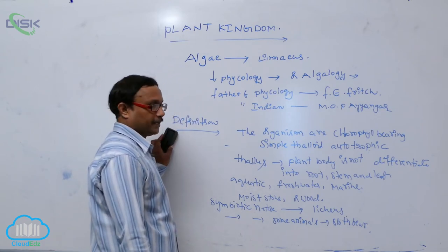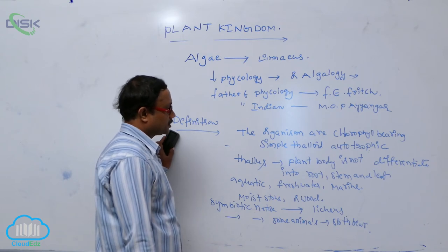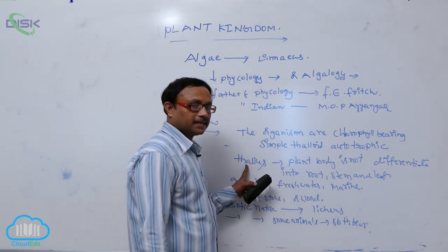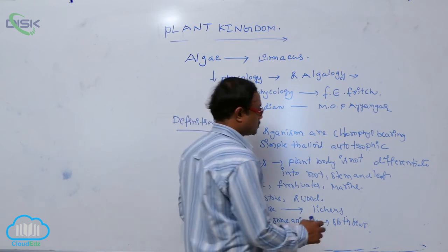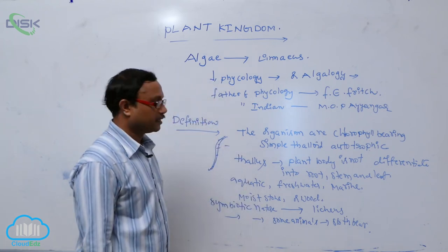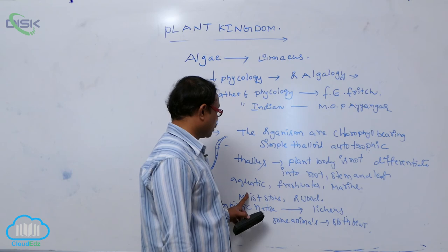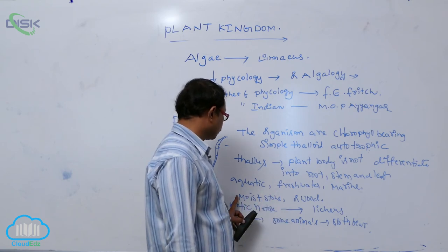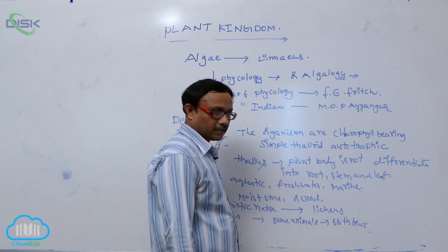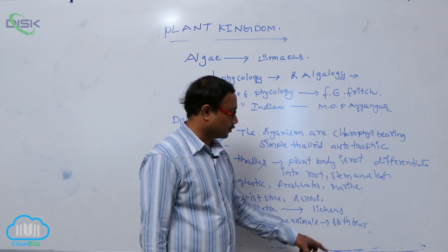Algae are organisms that are chlorophyll-bearing and simple thalloid, autotrophic organisms. Thallus means the plant body is not differentiated into root, stem, and leaf structure. Plants having a thallus body are known as thallophytes — they appear as slender, filamentous-like structures. Generally they grow in aquatic habitats, fresh water and marine, and also on moist stone or wood. Some algae are symbiotic, producing special plants known as lichens, and some show symbiotic nature with animals such as the sloth bear.